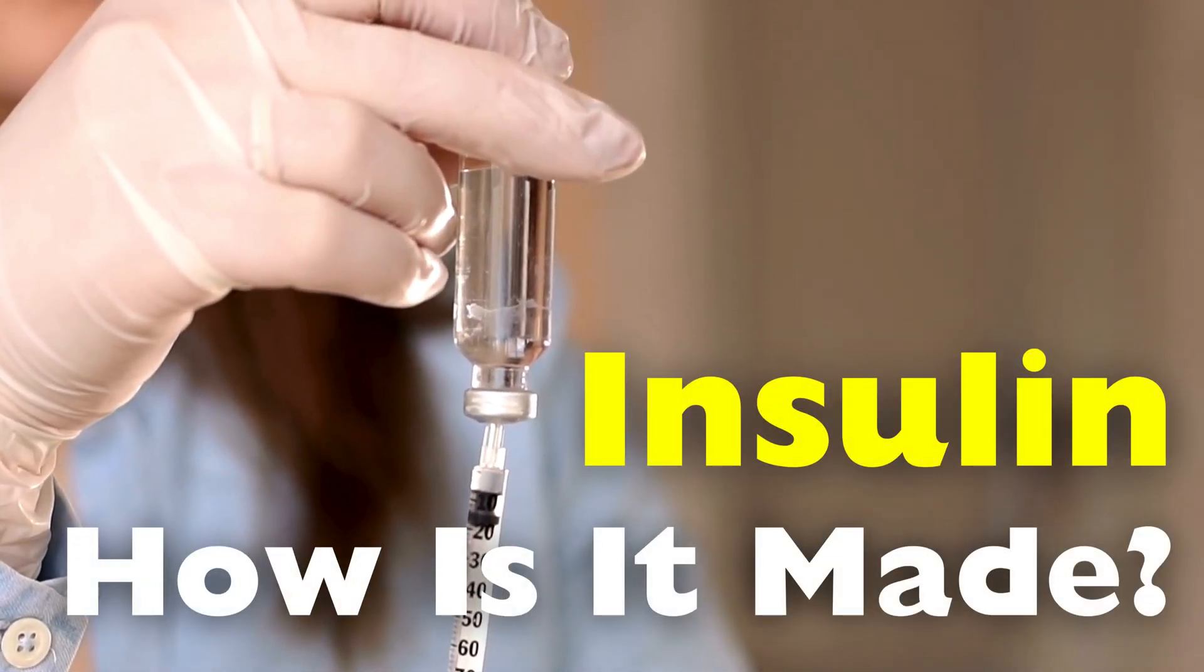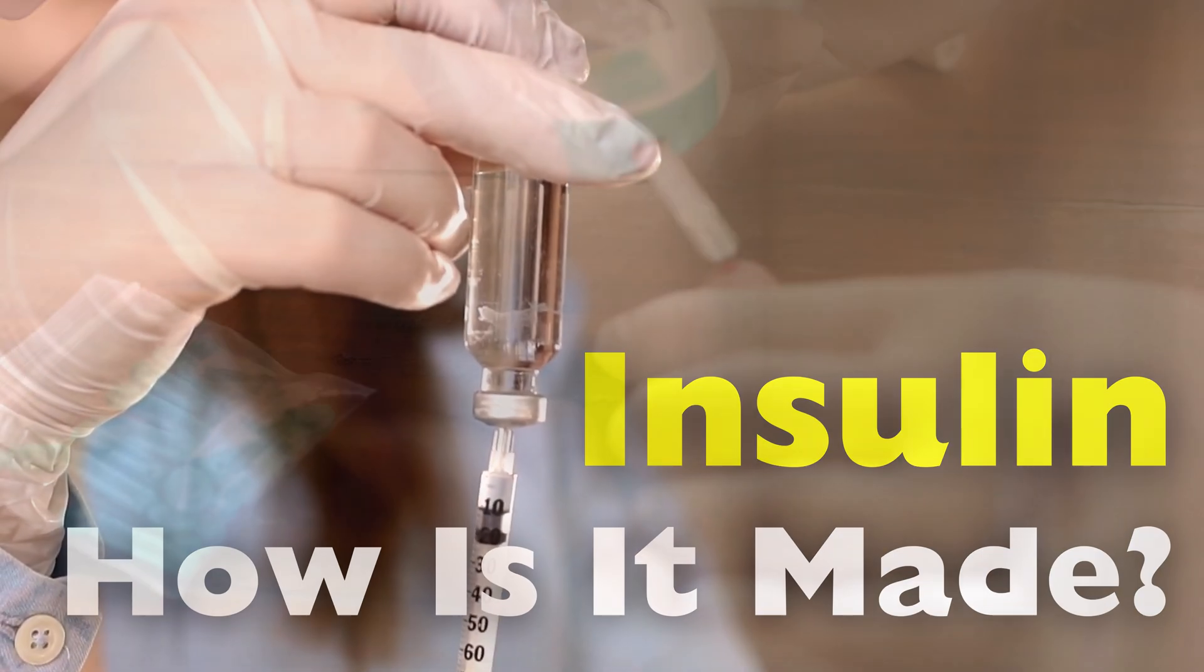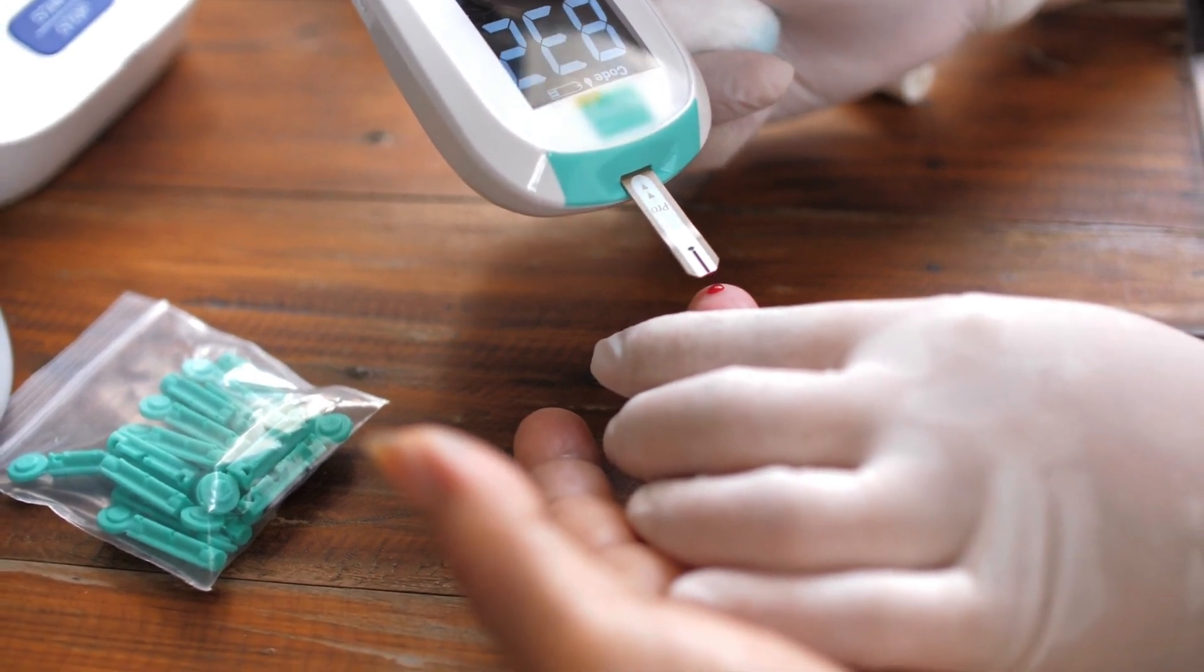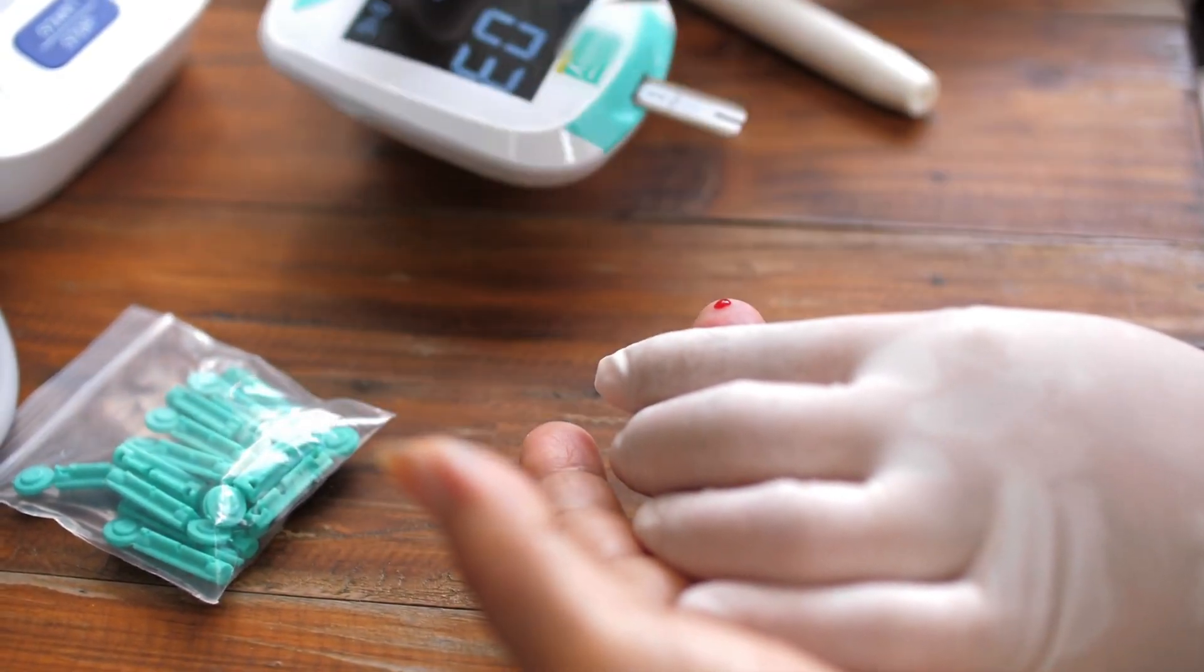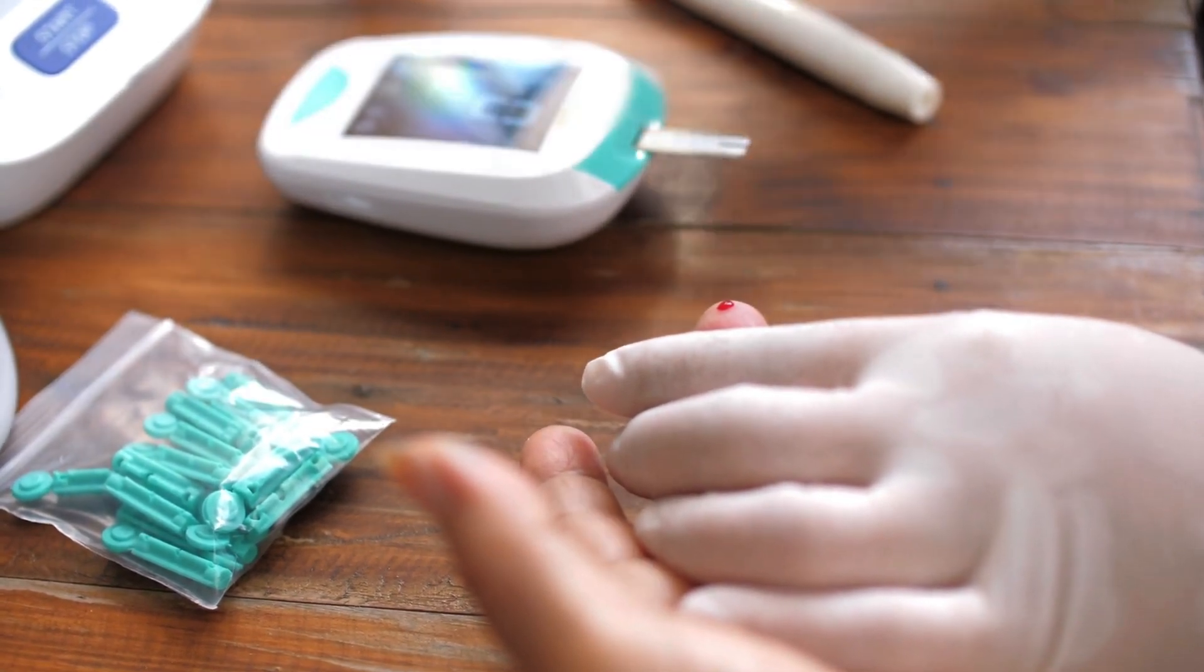In the ever-evolving world of medicine, few breakthroughs have had as profound an impact as insulin. This essential hormone regulates blood sugar levels, serving as a lifeline for millions of people with diabetes. Without it, the body struggles to process glucose, leading to serious health complications.